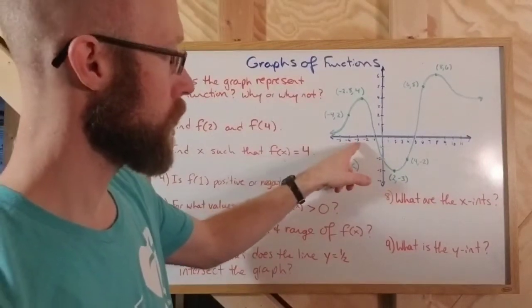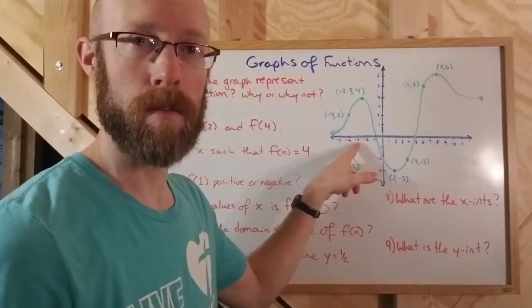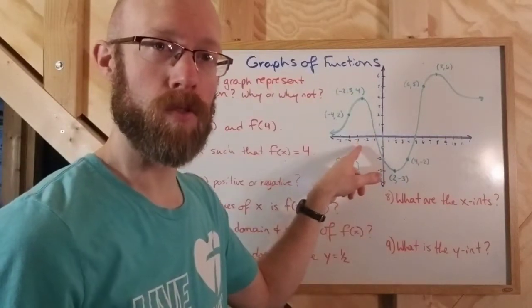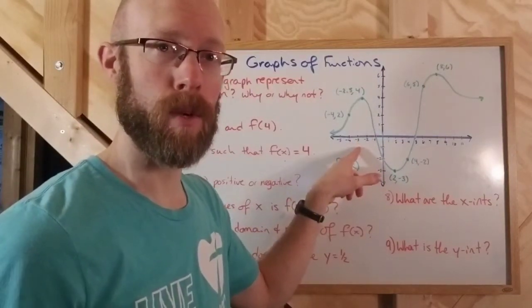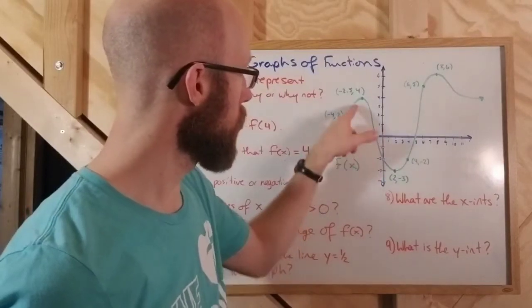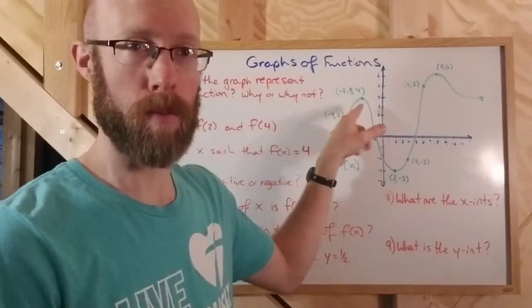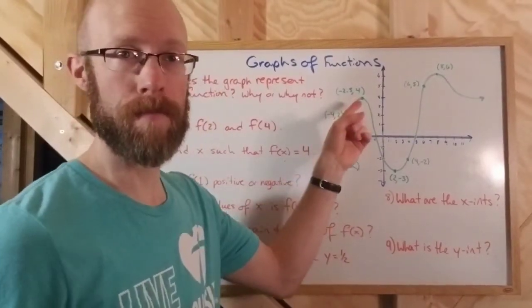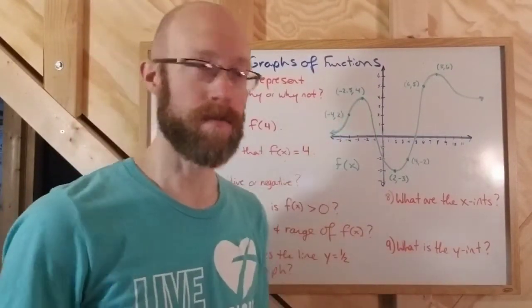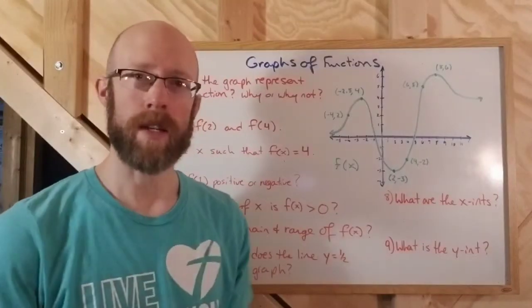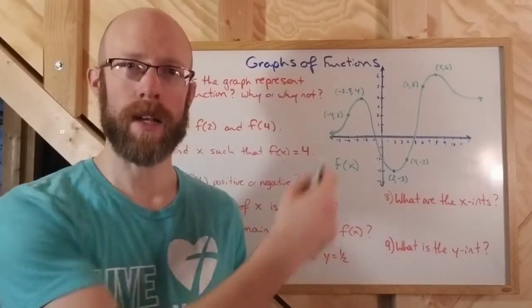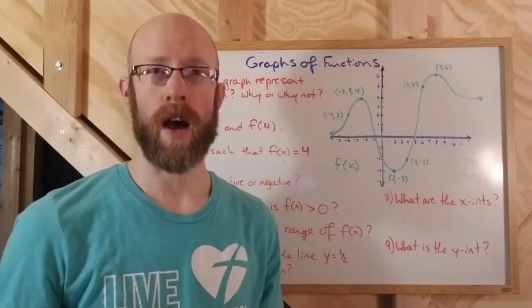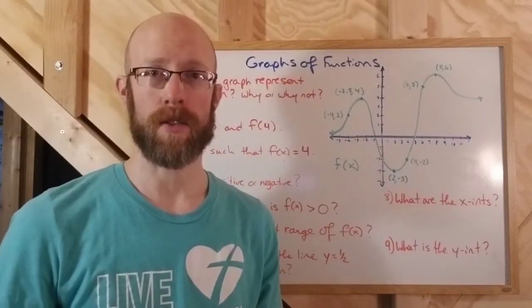For instance, negative 3: if I plug in negative 3, remember the x's are the inputs, the y's are the outputs. If I plug in negative 3, the output — well, there's just one of them. If you had two points that lined up vertically on the graph, then they would be two different y values that would correspond to the same x value.